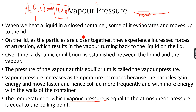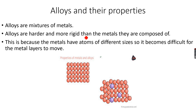This is about vapor pressure. We are now done with gases and liquids, so we are moving to solids. We have already talked about simple molecular structures, ionic compounds, and metallic structures in the chemical bonding playlist, so we are going directly to alloys and their properties. An alloy is a mixture of metals — for example, when you melt copper and iron and mix the molten states together, then solidify it, you get a mixture.